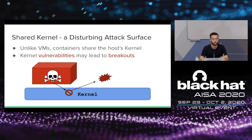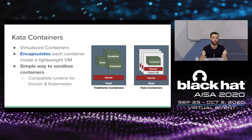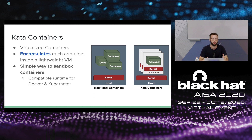That's quite concerning in a lot of scenarios. To tackle that issue, a few tools arrived that allow you to sandbox containers, and Kata containers is one of the first solutions to do that. It takes a straightforward approach: it runs each container inside a dedicated lightweight virtual machine. By doing that, you get two layers of isolation — the container and then the virtual machine — and you also mitigate kernel vulnerability-based breakouts. The idea of Kata is to provide a simple way to sandbox containers where you can plug Kata into existing solutions like Docker and Kubernetes.